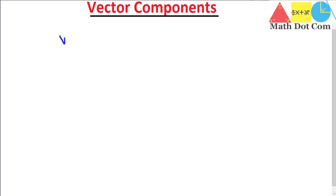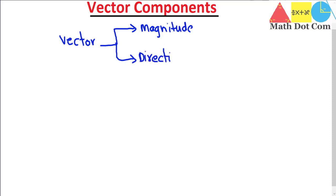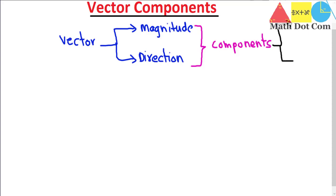We will start with the definition of the vector. As we know, a vector is defined by two things: one is the magnitude, that is the value of the vector, and the other is the direction. These two things are very important in order to define a vector. But there is another way to define vectors, that is in terms of its components. Components of the vector are basically another way of representing vectors — they split the vector into two parts.